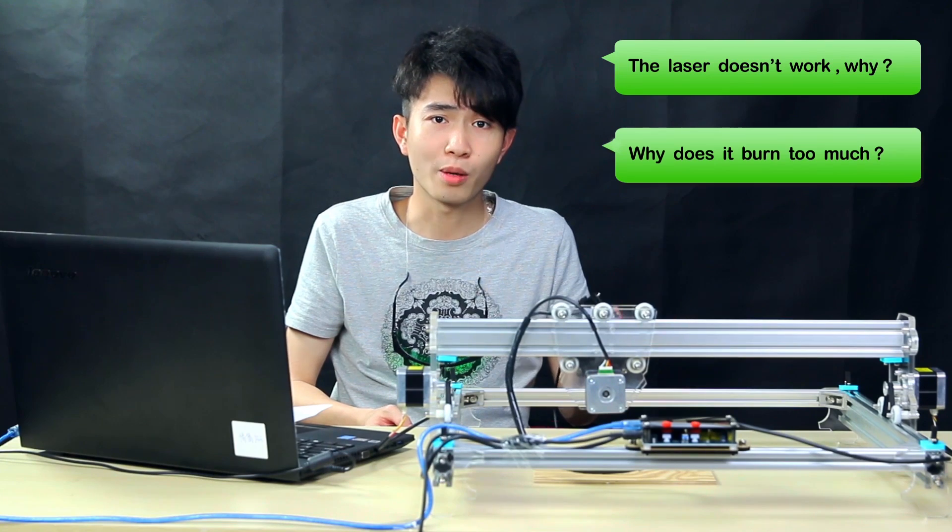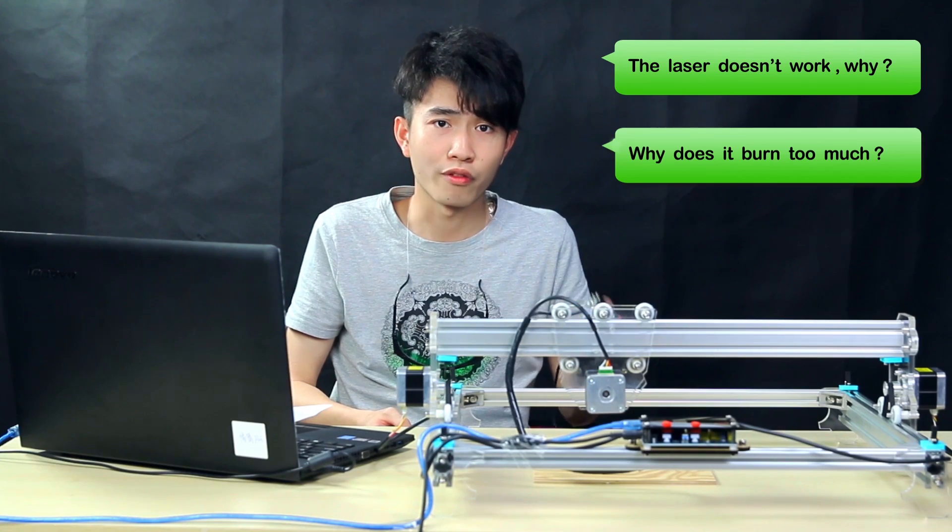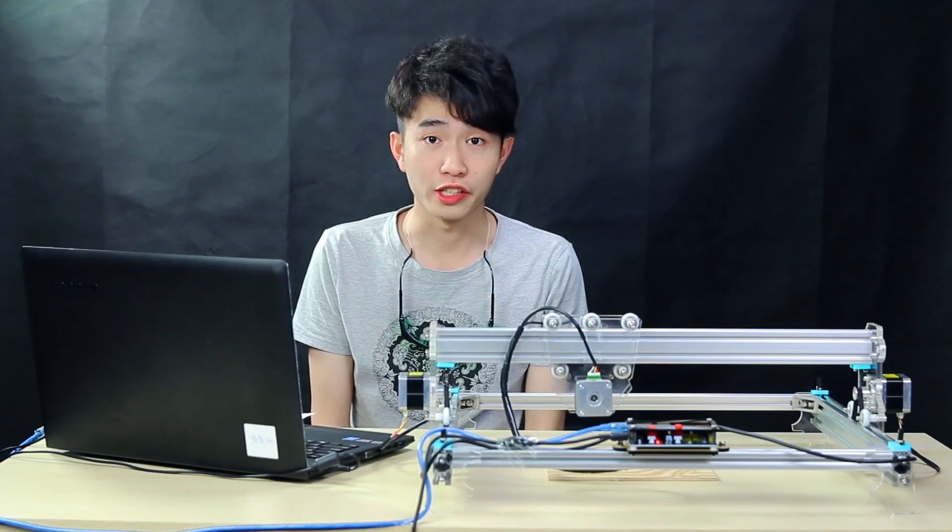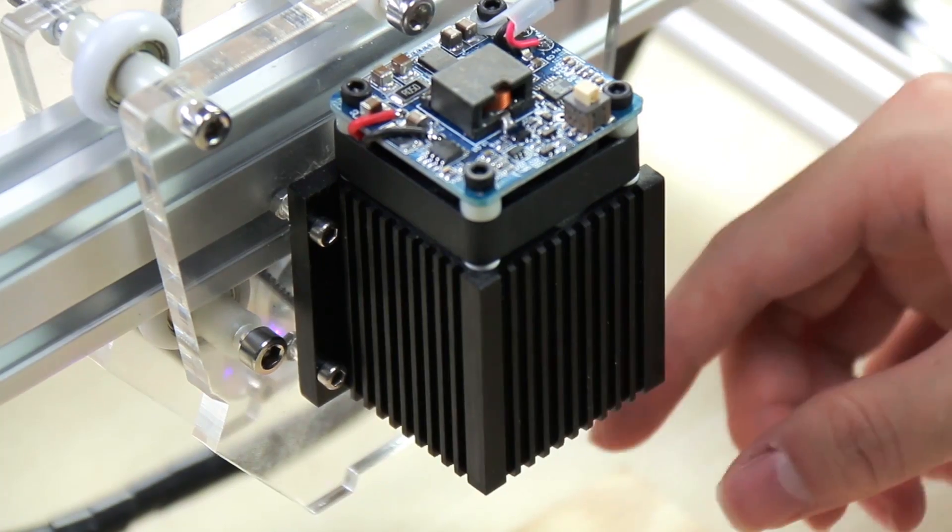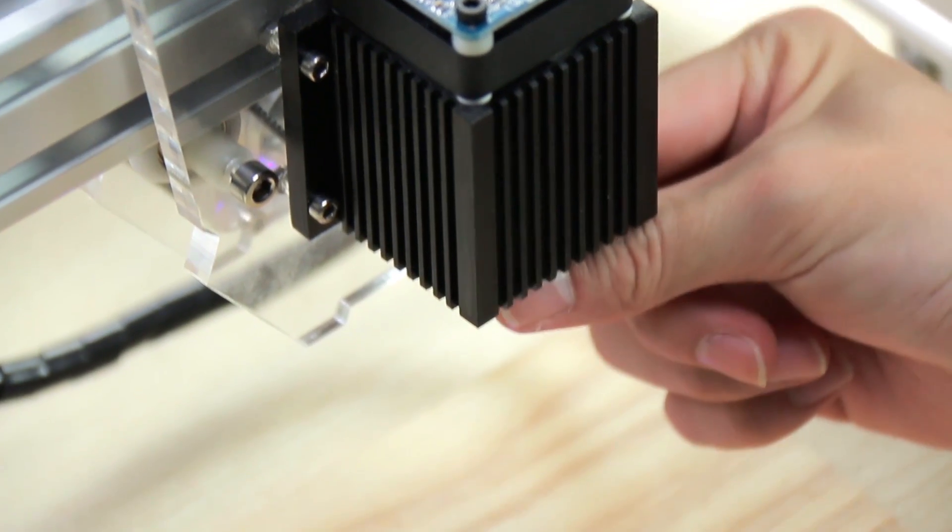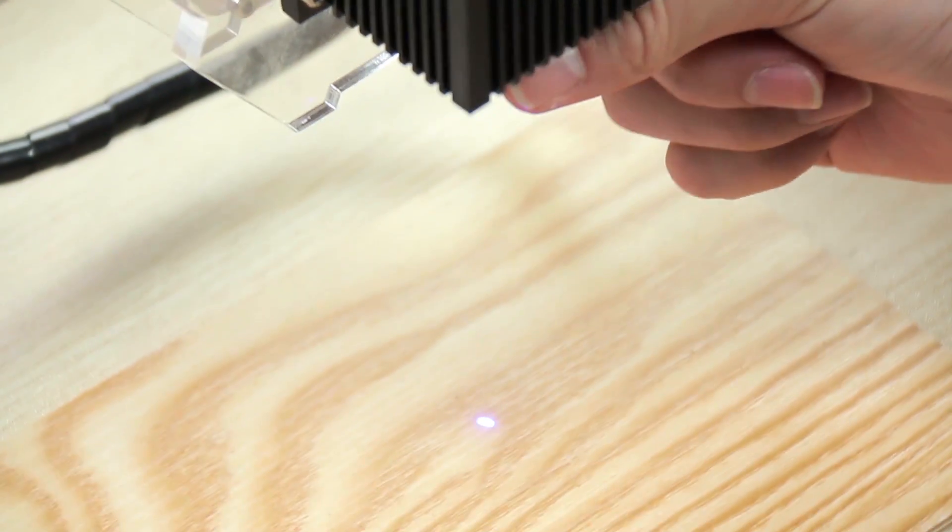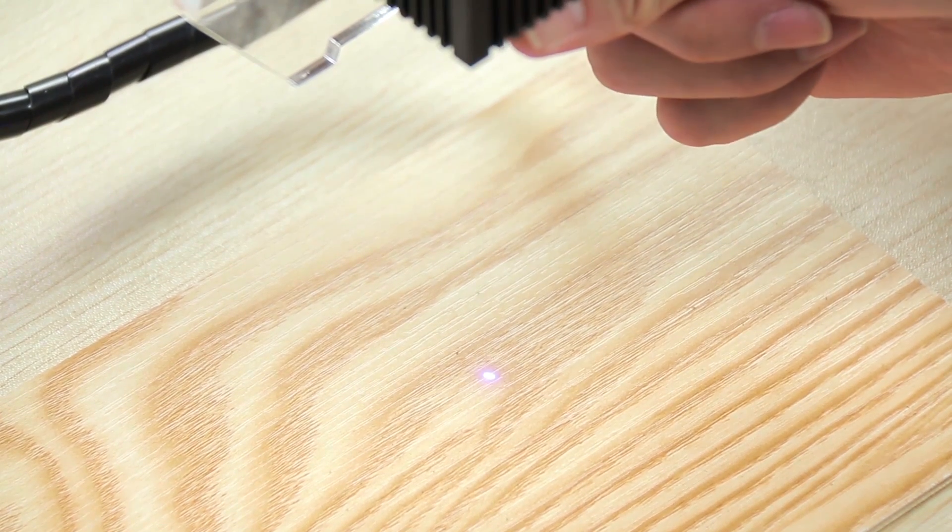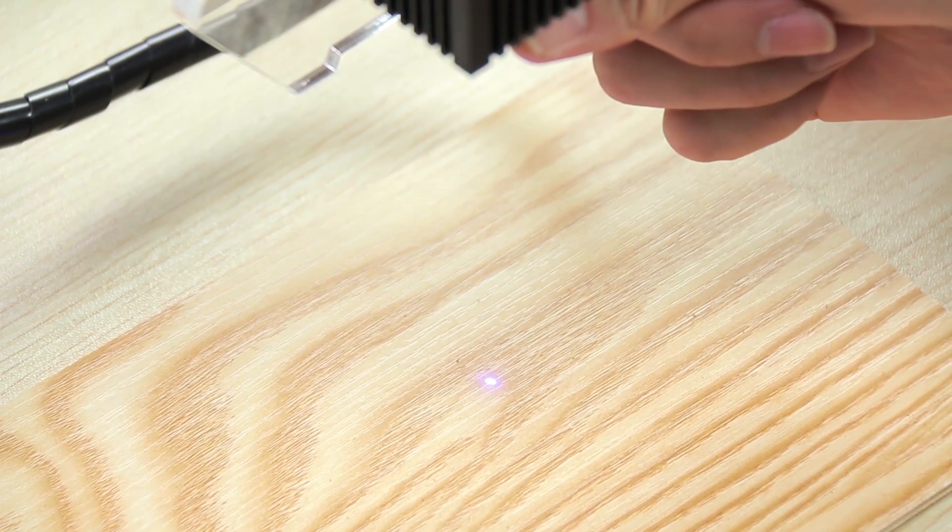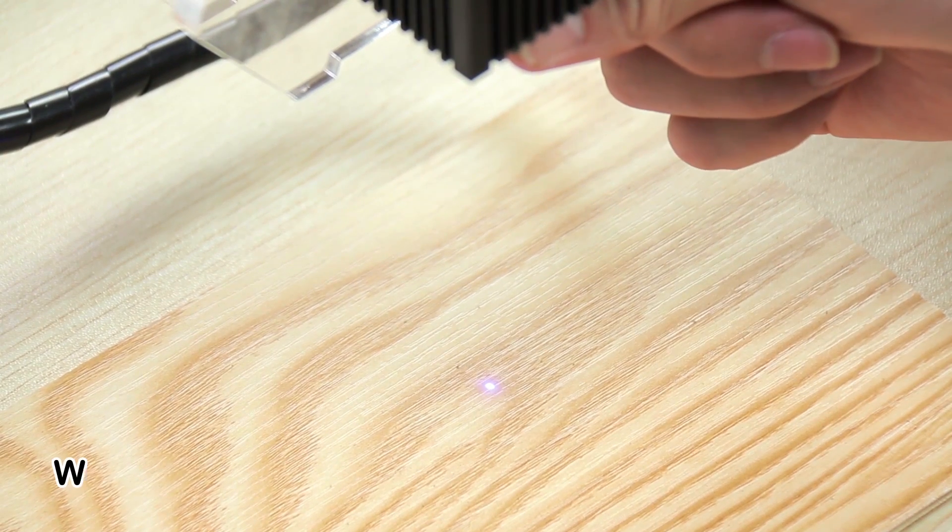Firstly, turn on the low light switch. Please notice, do not turn it on for more than 20 seconds. After that, rotate this screw to adjust the focus. You can see the point is getting small.